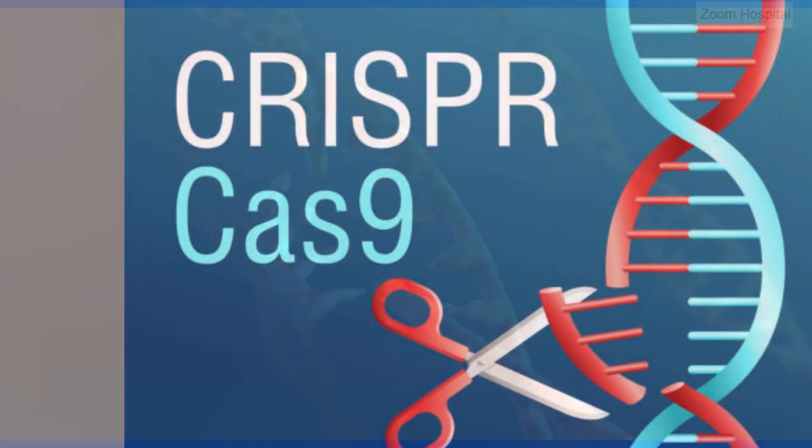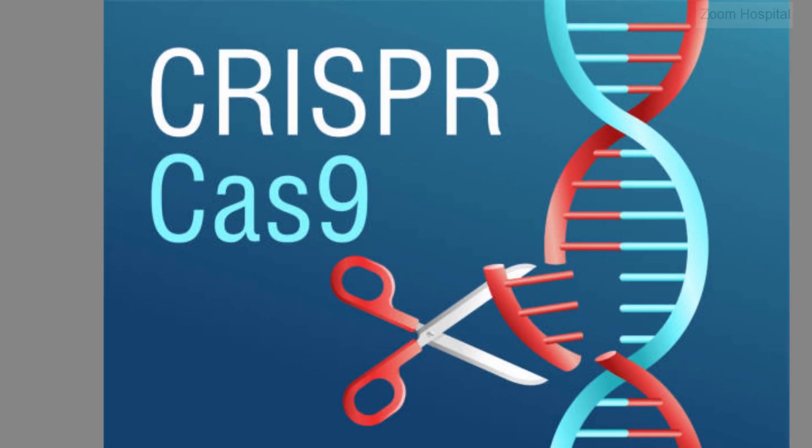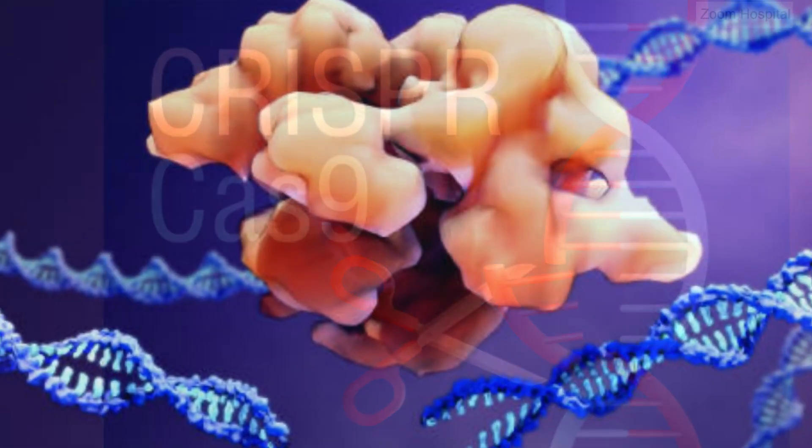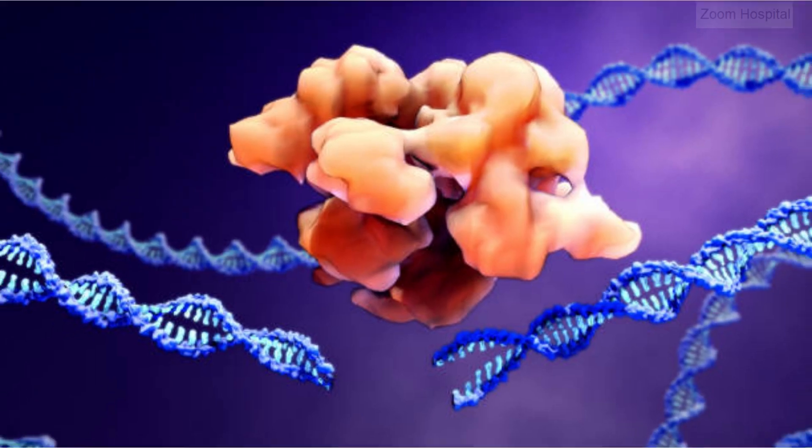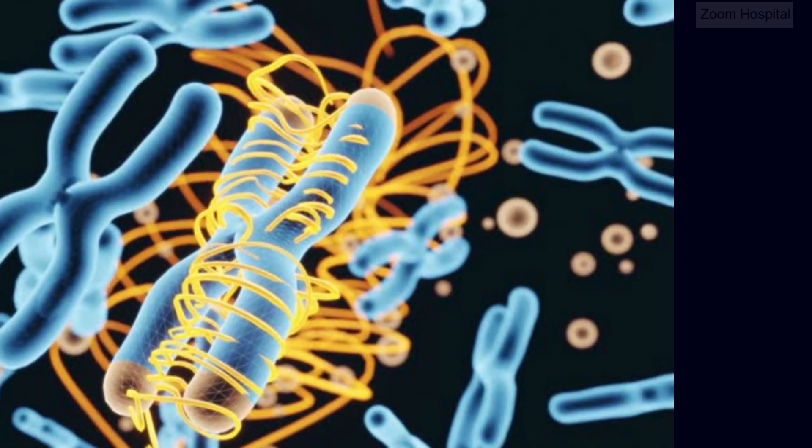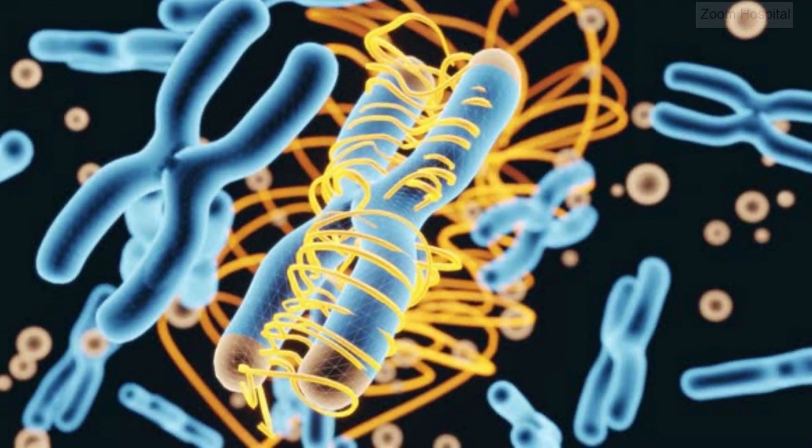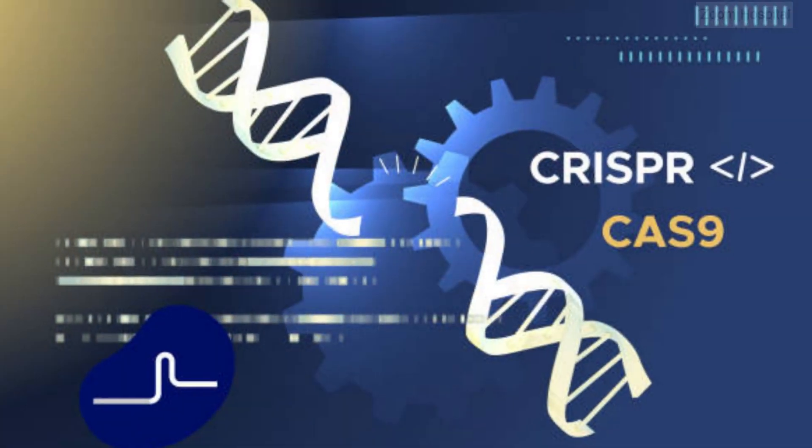Four: DNA cleavage. The Cas9-guide RNA complex then scans the DNA within the cell until it finds a sequence that matches the guide RNA. When it finds a match, Cas9 creates a double-strand break in the DNA at that precise location.